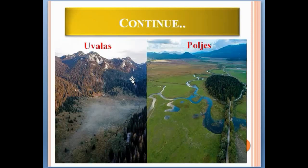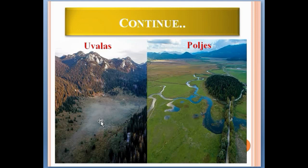Uvalas are larger depressions formed by the collapse of extensive roof sections. They are forms of dolines which actually form over an extensive area. As you can see, this portion has collapsed and these structures are formed.